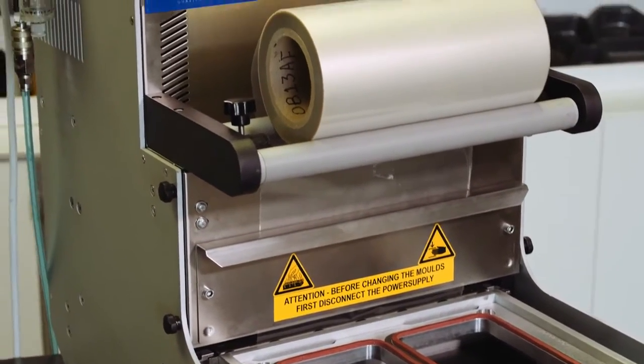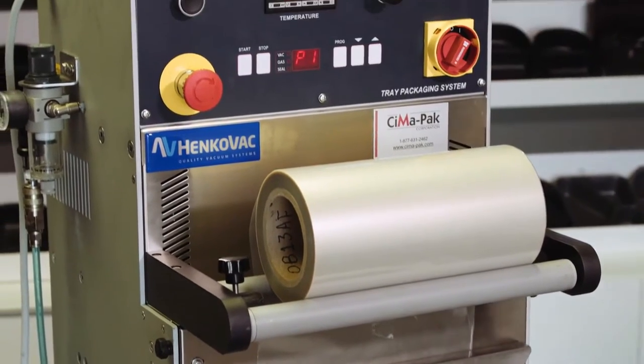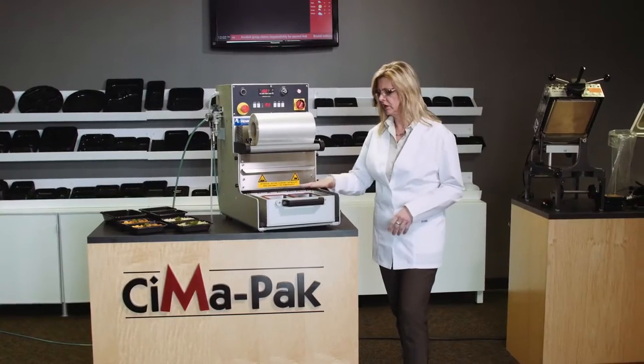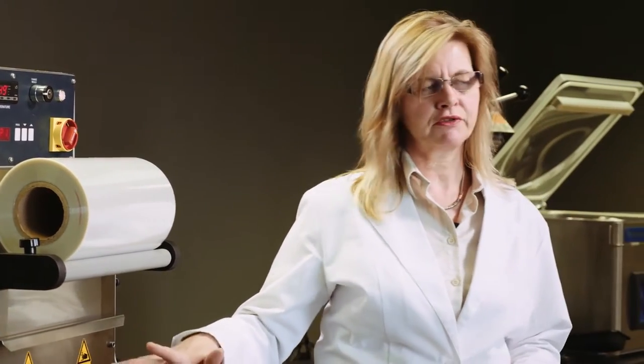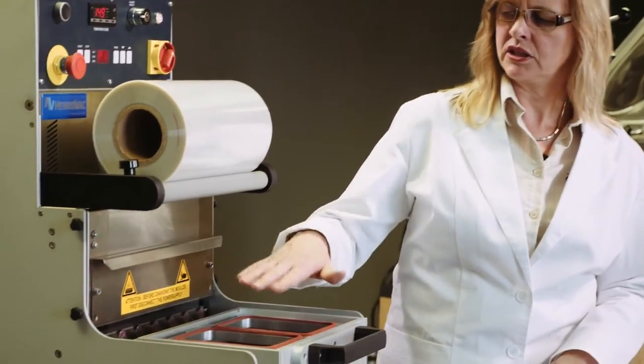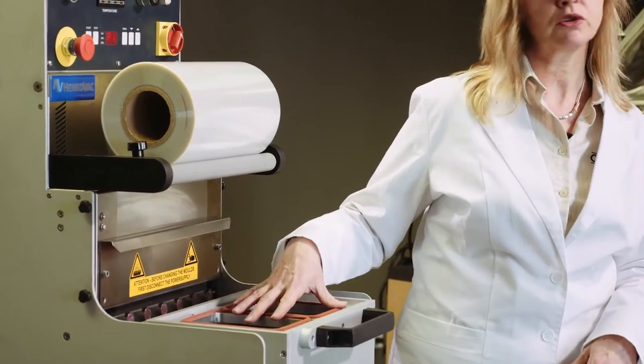It seals CPET trays, PET trays, all kinds of trays, whichever size you're looking for. You can get various molds for different trays. You can do two small ones or one larger one.